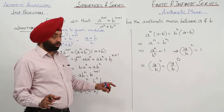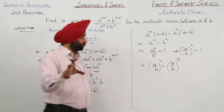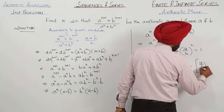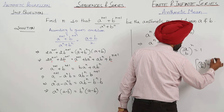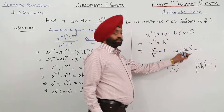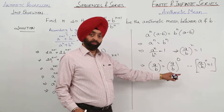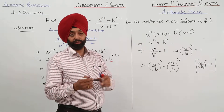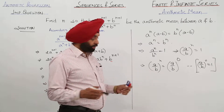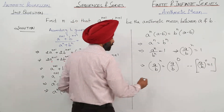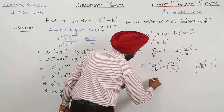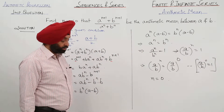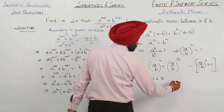Only if you are aware of this, can you solve it — otherwise you would stop here or think the question is wrong. Since the bases are equal, the powers must be equal, so n equals 0. That is the answer.